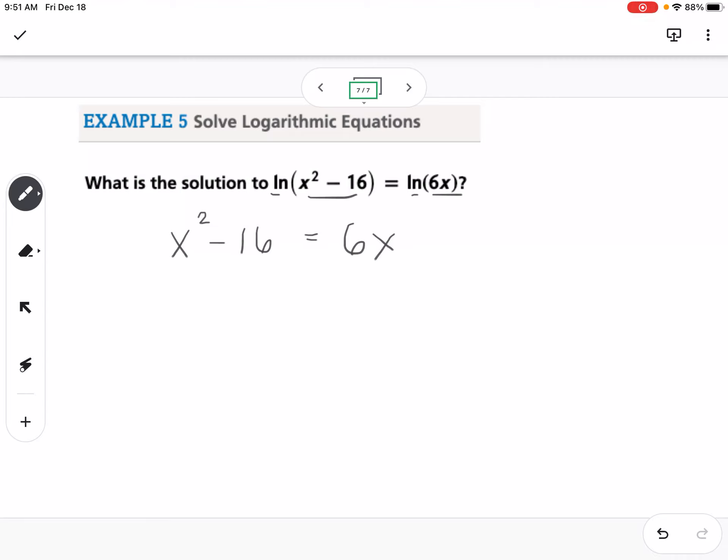This is a quadratic. We can get it all onto one side. So this would be x squared minus 6x minus 16. Then we can factor that. We can say this is x minus 8 and x plus 2.